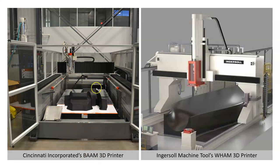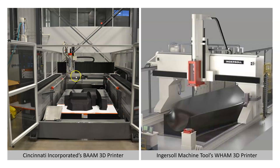Cincinnati Incorporated's BAM — big area additive manufacturing — is a huge machine basically the size of a car. It's a material extrusion process, just like printers you might have at home, but uses a large deposition head. We also have the Ingersoll Machine Tools Wham 3D printer, which is even bigger — here they appear to be printing a mold for a giant wind turbine.